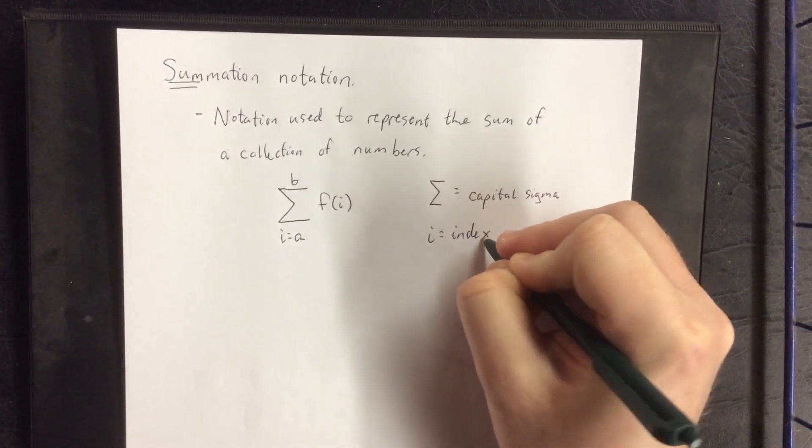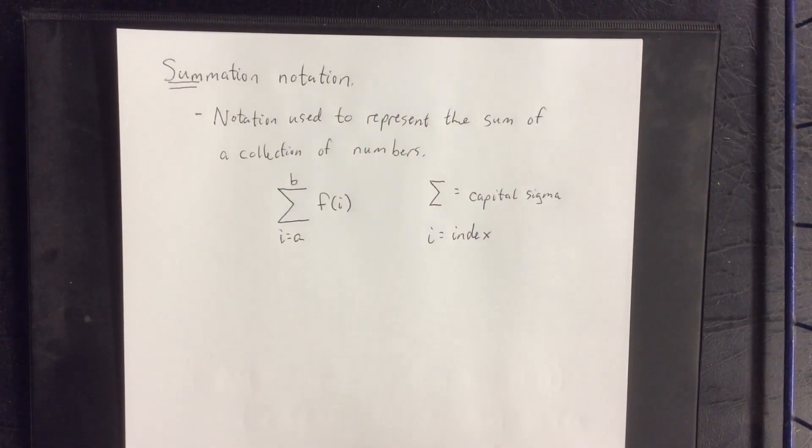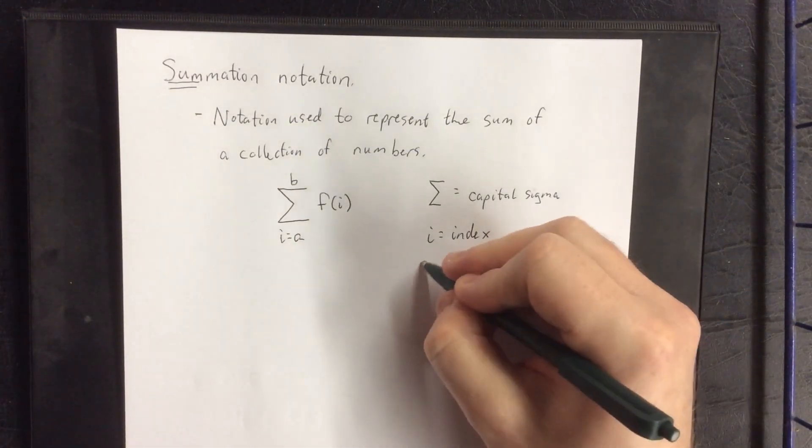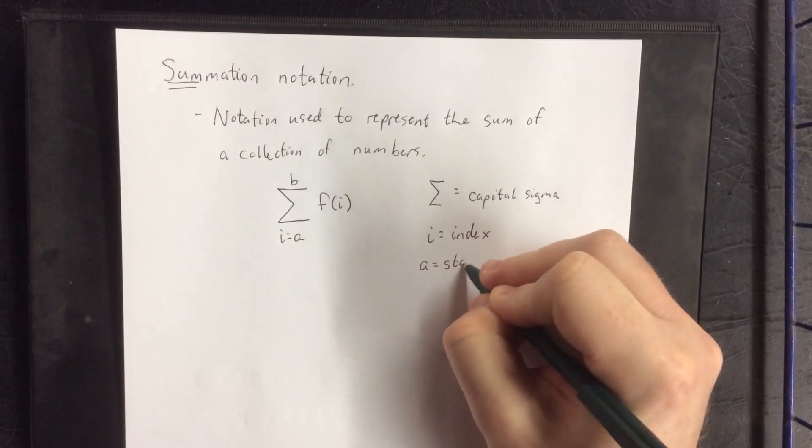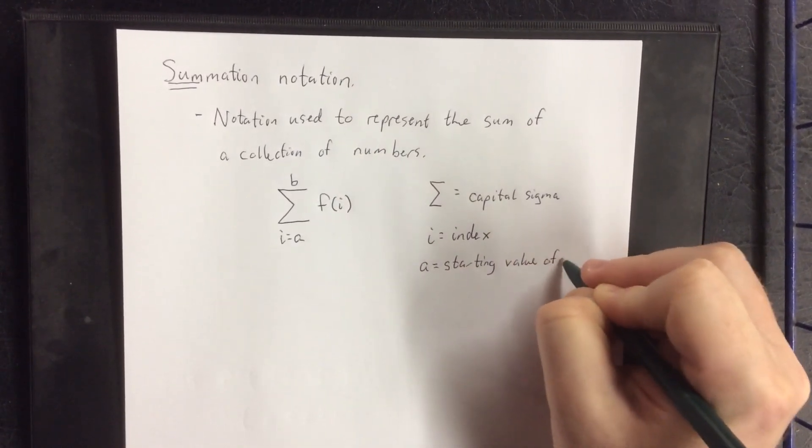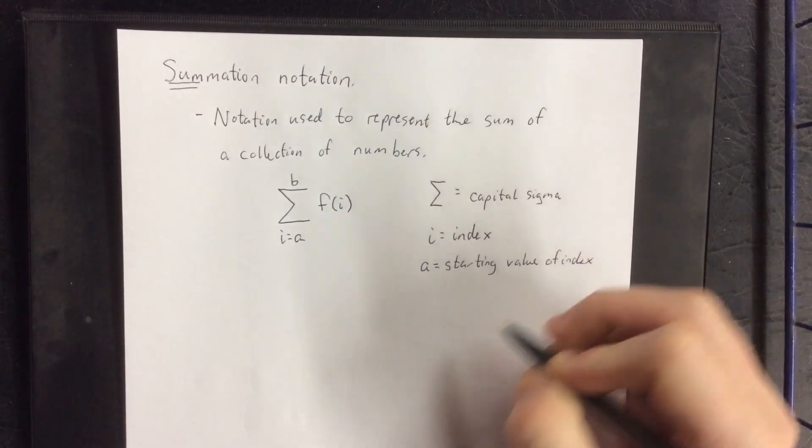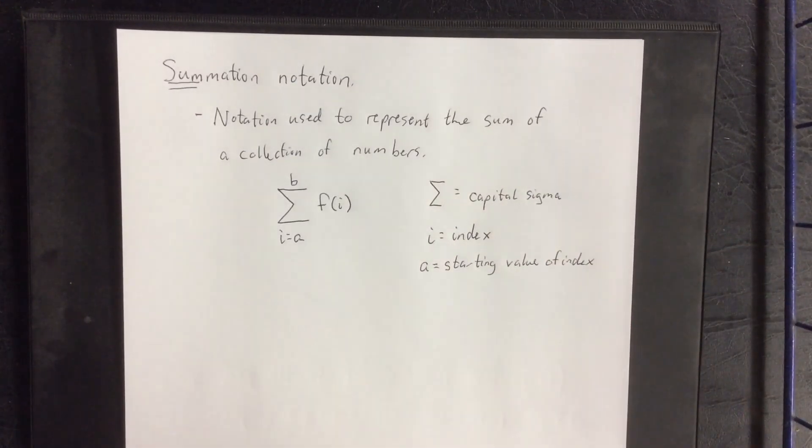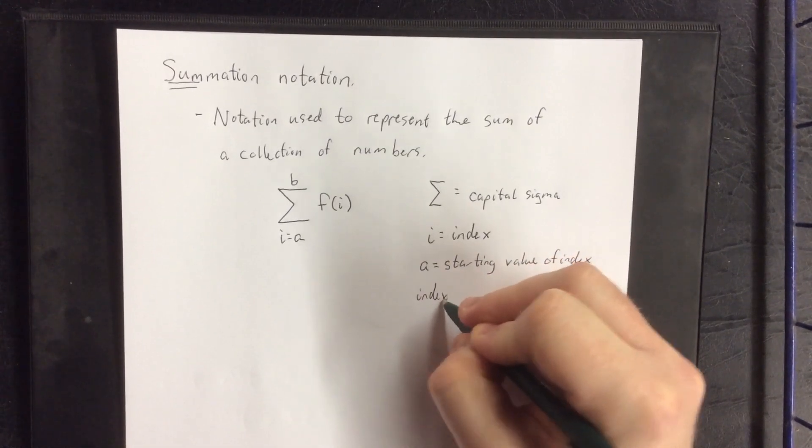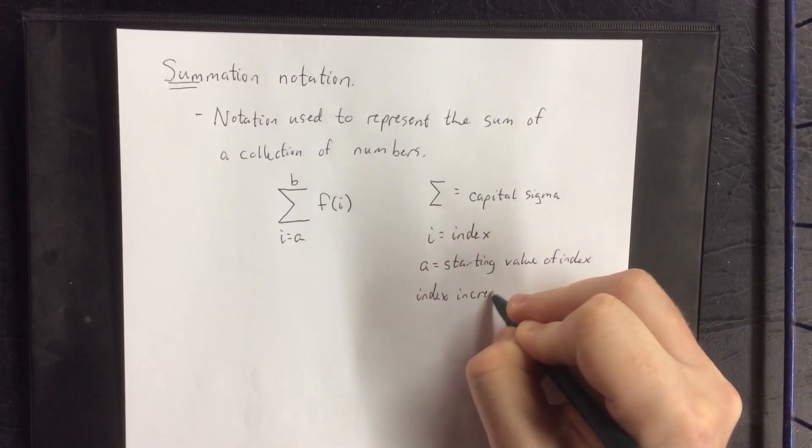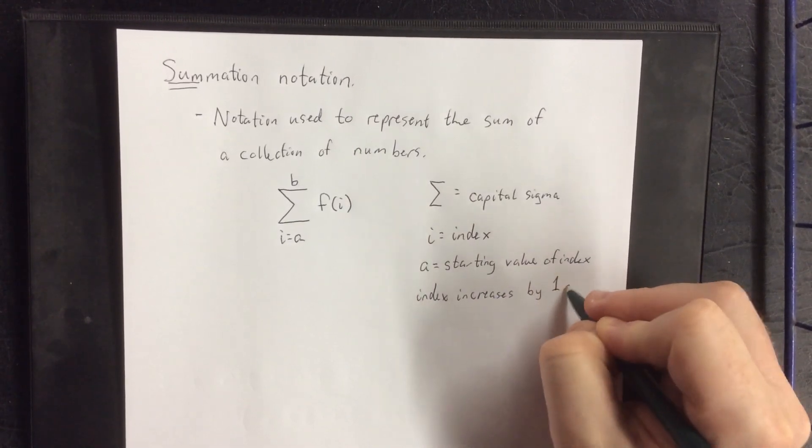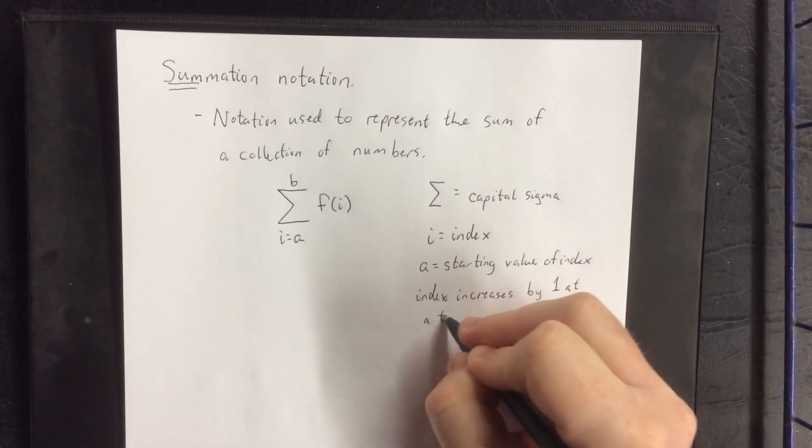I is referred to as an index. An index starts at a given value, so the starting value of the index, and it increments going up one at a time. Index increases by one at a time.